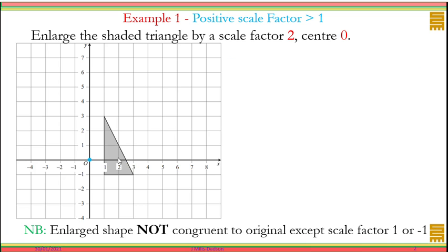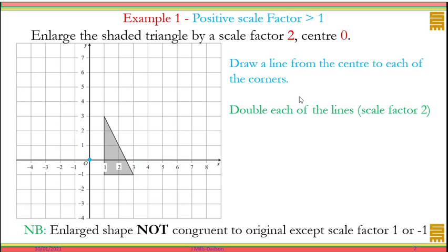So this is my center. I'm going to draw a straight line from the center to each of the corners or the vertices. Then each line I've drawn, I'm going to double it because this is scale factor 2. How do I do that? Let's start.